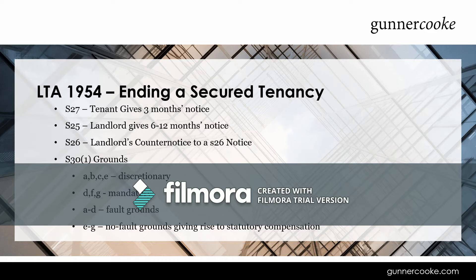Ground A covers premises in disrepair, B covers arrears of rent, C covers breaches of contract, and D covers suitable alternative accommodation. These are called the fault grounds, where the tenant is considered to be doing something wrong. Then there are non-fault grounds E to G: the tenancy was created by a subletting, the landlord has an intention to develop, or the landlord intends to occupy the property themselves. These are no-fault grounds because the tenant hasn't done anything wrong, meaning they are entitled to statutory compensation, usually calculated as a multiplier of the rateable value depending on how long they've been in the property.